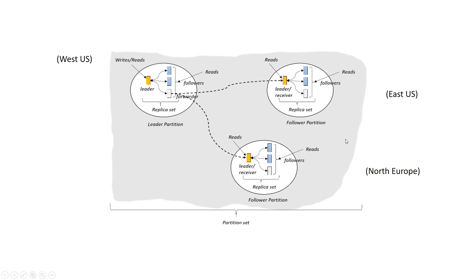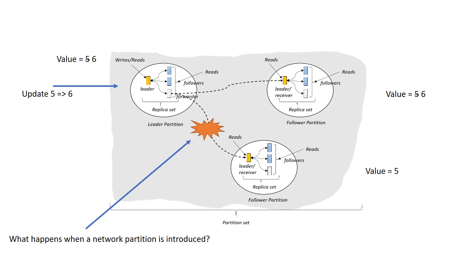To illustrate an example, we're going to put a record in each of these different regions whose value is 5, and we're going to update that value from 5 to 6. We've replicated 5 to 6 in the local region, we acknowledge the update, and now we're going to start propagating that value from 5 to 6 over to these more distant geographic other regions — these other resource partitions. The first example to think about is what happens if a network partition is introduced — like a major storm or a natural disaster that disrupts the network between the two regions, making propagating the data problematic.